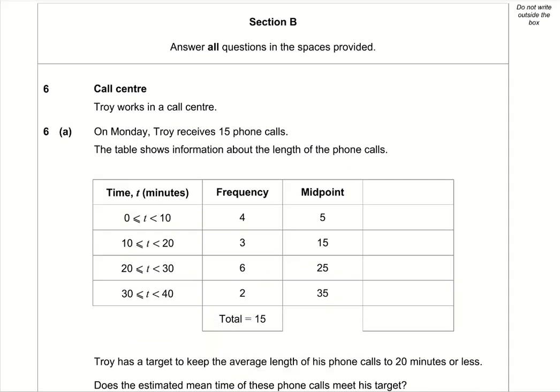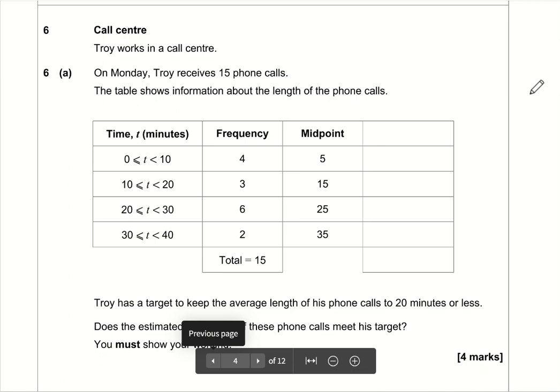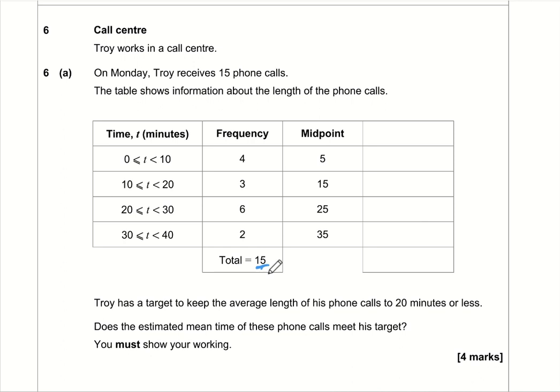Moving on to Section B. Troy works in a call center. On Monday he receives 15 phone calls. We can see the total is 15, and the breakdown: 4 calls were between 0 and 10 minutes, 3 between 10 and 20, 6 between 20 and 30, and 2 between 30 and 40.